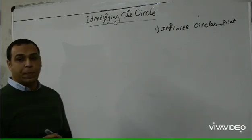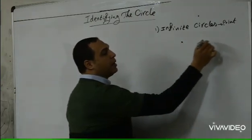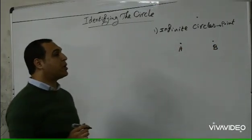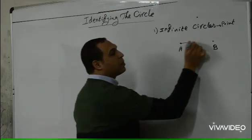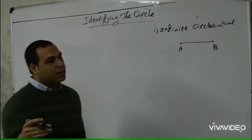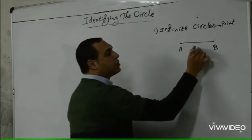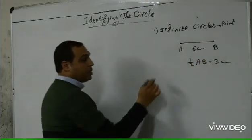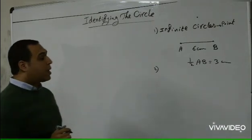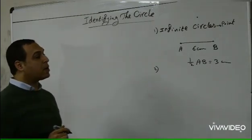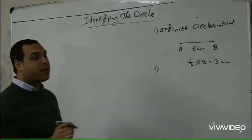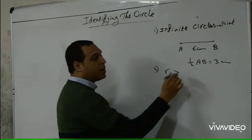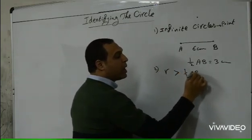How many circles can be drawn passing through two points, like A and B? First, we measure the distance between A and B. If the distance is 6 cm, then half of AB equals 3 cm. How many circles can be drawn passing through A and B if the radius is more than half AB? Infinite circles.